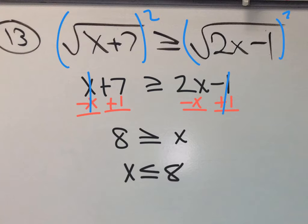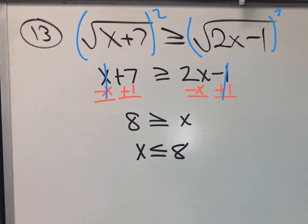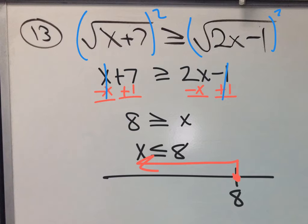Anyway, so that's my answer. So when you think about that when you think about the number line say here's 8 and when you say less than or equal to 8 it's that way, now it's that way forever.